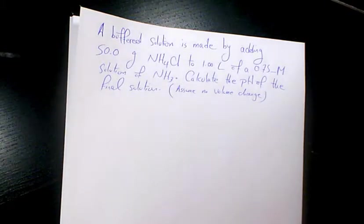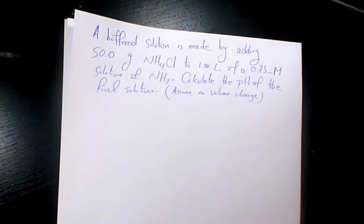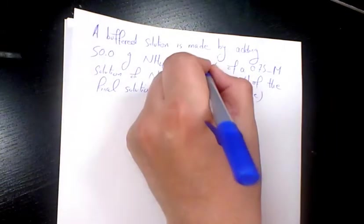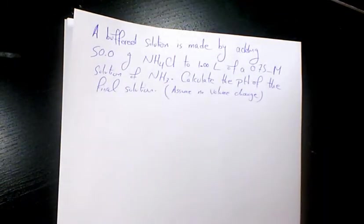What's up guys, this is Massey. Welcome to another video. In this video I want to show you how to find the pH of a buffered solution. A buffer solution is made by adding 50 grams of ammonium chloride (NH4Cl) to 1 liter of a 0.75 molar solution of ammonia. Calculate the pH of the final solution.